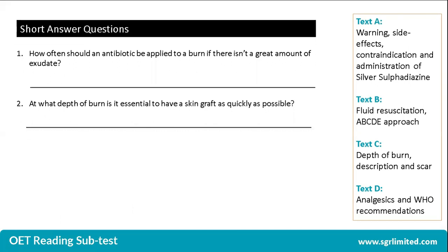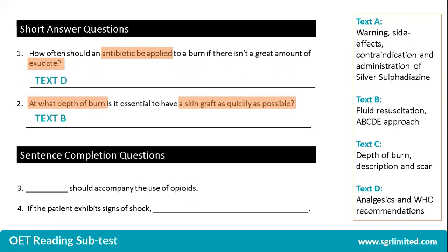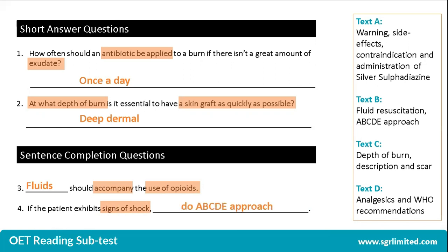This could be followed by short answer questions and then a sentence completion question. Remember that these two types of questions can interchange on the day. On one test, you could be asked to answer the short answer question first, followed by sentence completion, or sentence completion first followed by short answer questions. The strategies, though, are exactly the same. We need to understand what the question is looking for in order to find out which text we can find the right answer in. Once we are able to locate the text, we then scan for our correct answer. This same strategy works for sentence completion: we look at our keywords, find the correct text, and then answer our questions.